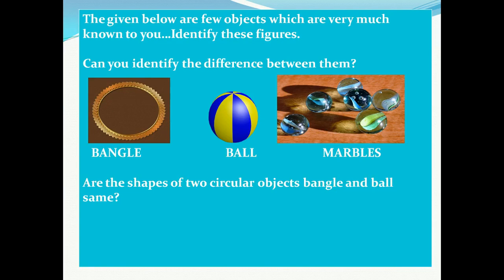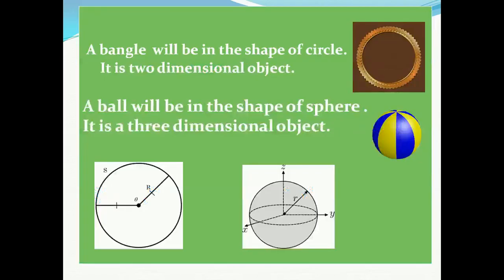Before we start the topic, the given below are a few objects which are very much known to you. Let us identify the figures. The first one is a bangle, a ball, and the third one is marbles. Are the shapes of these circular objects the same or not? People generally get confused regarding their shapes. The first one, that is a bangle, is a circle, whereas the ball and marbles are in the shape of a sphere.